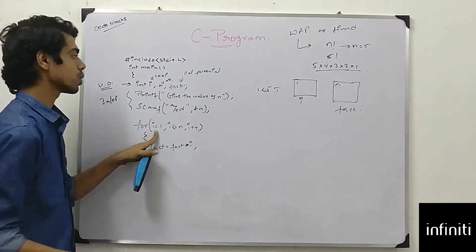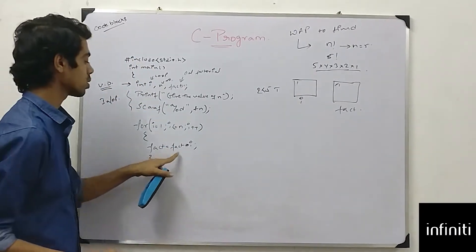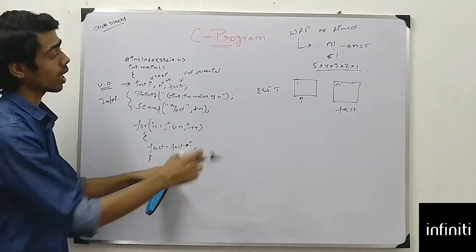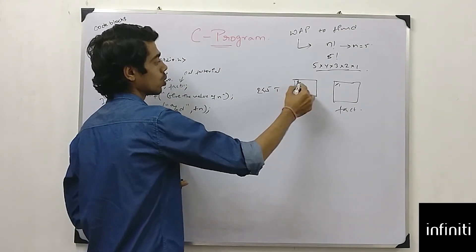Now i is equal to 2. 2 is less than 5, condition true. Fact is equal to fact into i. What is fact? Fact is 1. What is fact into i? 1 into 2 which is 2.